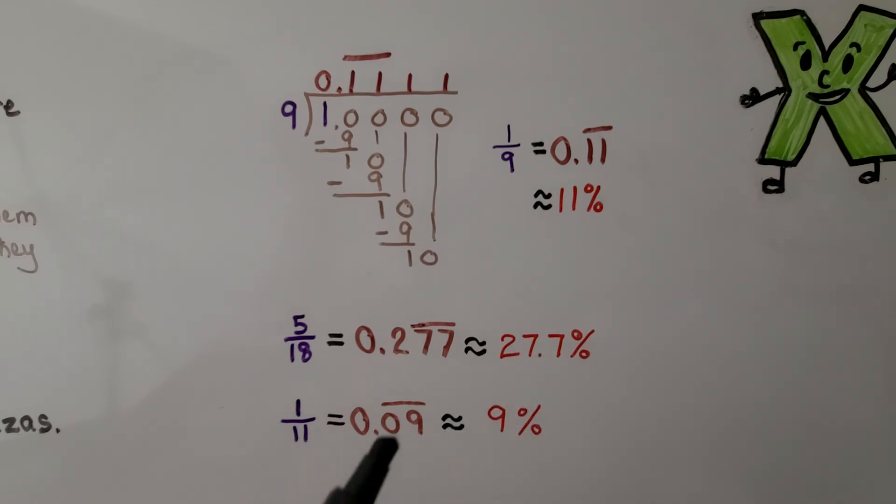For one-eleventh, the 0 and 9 keep repeating over and over again. 0, 9, 0, 9, 0, 9. So we can just write the 0, 9 with a bar over the top as a decimal and say it's approximately 9 percent. It's not exact because we're ignoring all those other zeros and nines. So we just say it's approximately 9 percent.